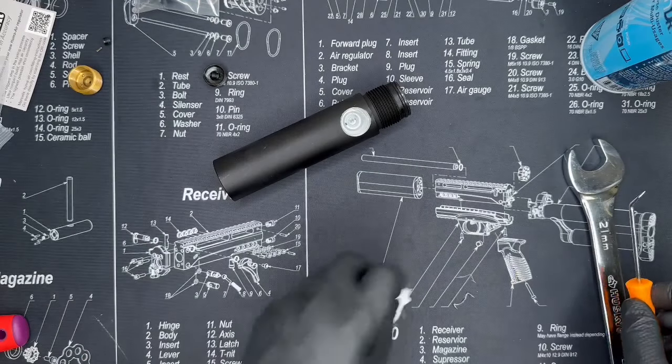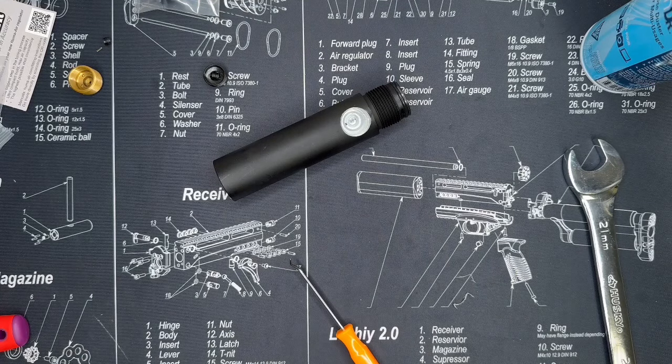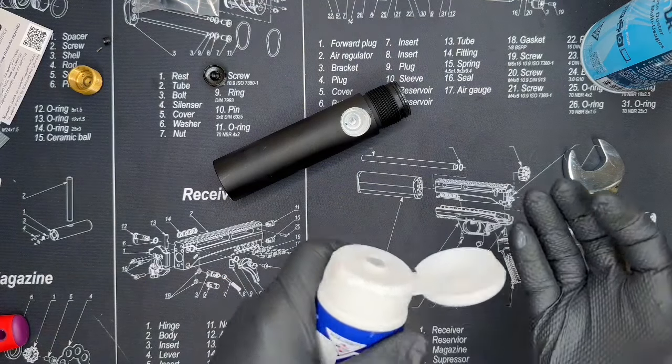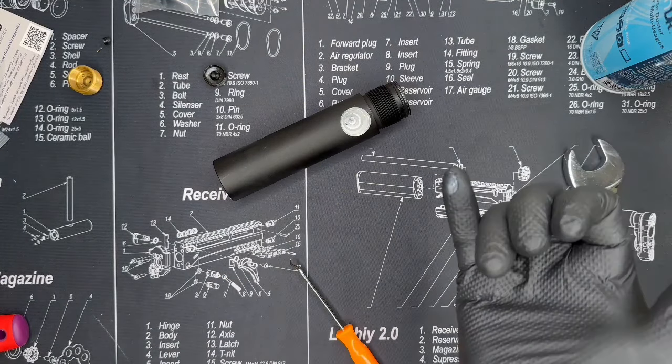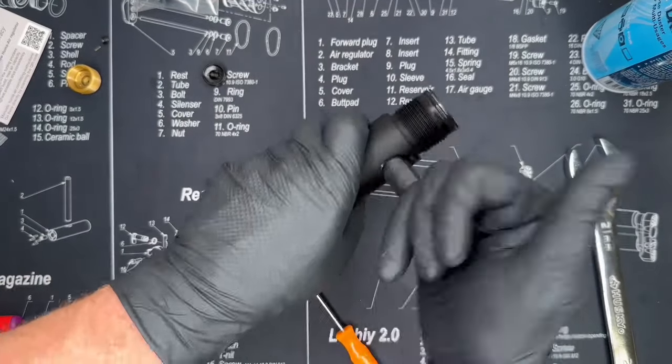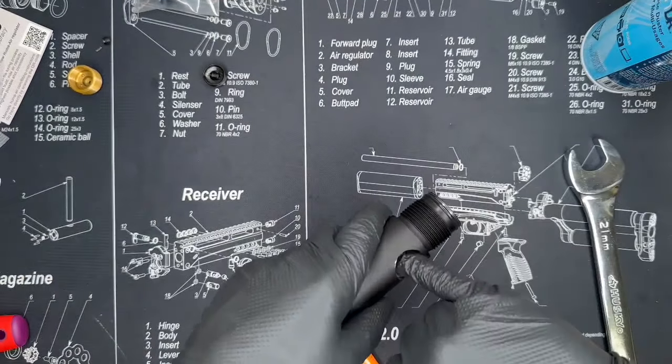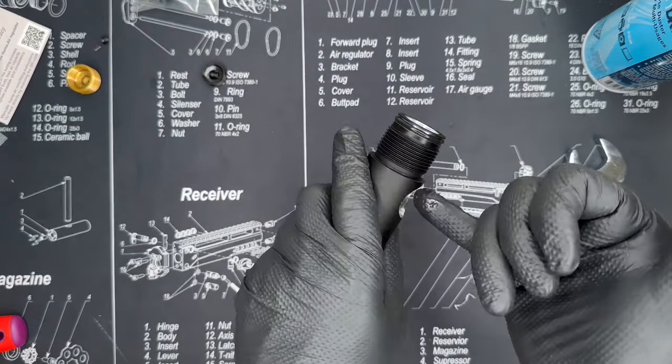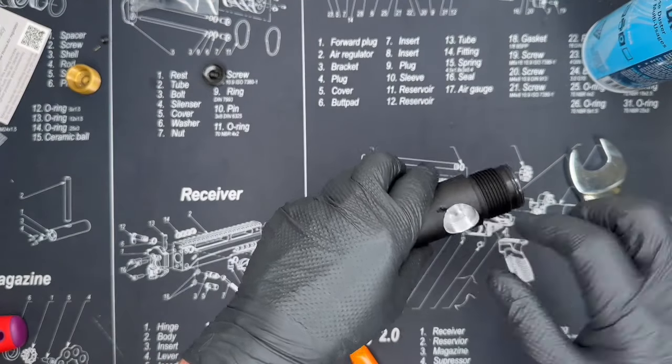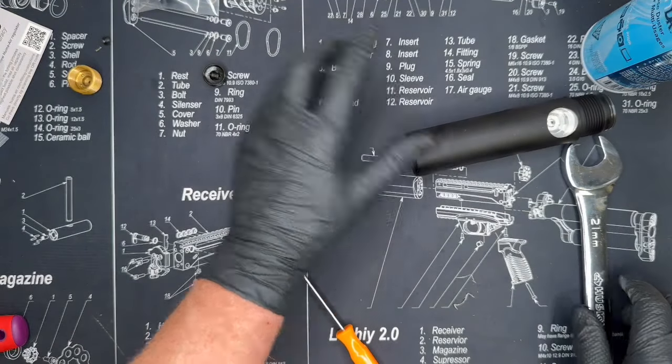Now that we've got that nice and clean, we're going to take a little bit of silicon - pure silicon, we don't want to use anything else. It doesn't take much, you can see I don't have very much there. We're going to coat the inside of the regulator, especially the porthole there.